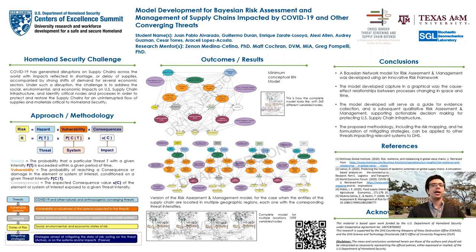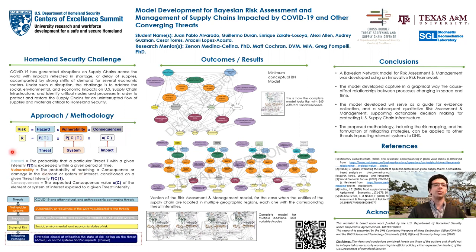The risk assessment framework and its equation shown here in the poster has three main components: hazard, vulnerability, and consequences. Their definitions are also included in the poster. These components are characterized by the threats, the system vulnerable to these threats, and the social, economic, or environmental impacts on the systems.